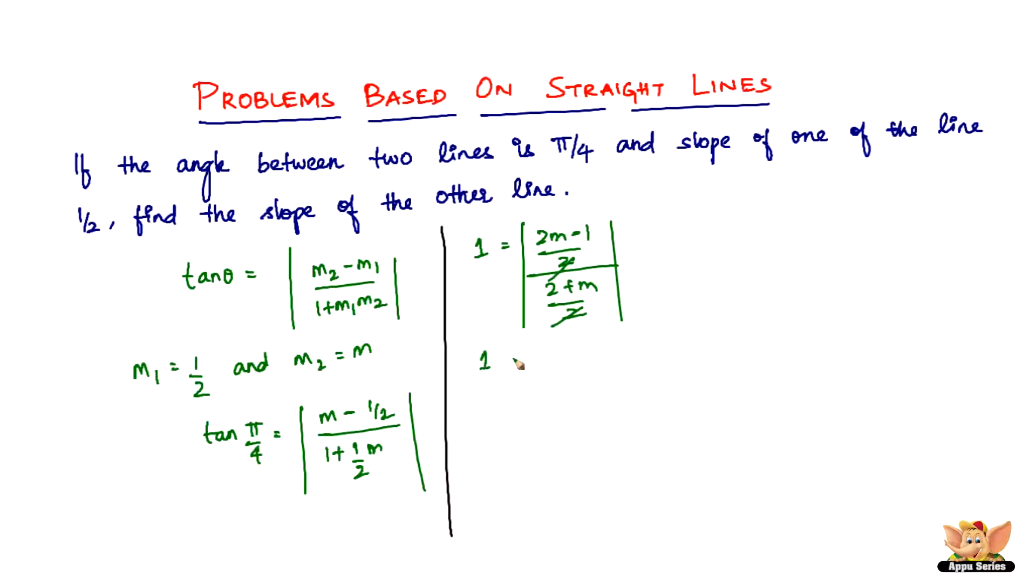So we have 1 equals, so now we need to take out the mod. So the 1 becomes plus or minus. As long as there is the mod, the sign is not very important, but once the mod is taken out, it becomes plus or minus. So plus or minus 1 equals 2m minus 1 divided by 2 plus m.